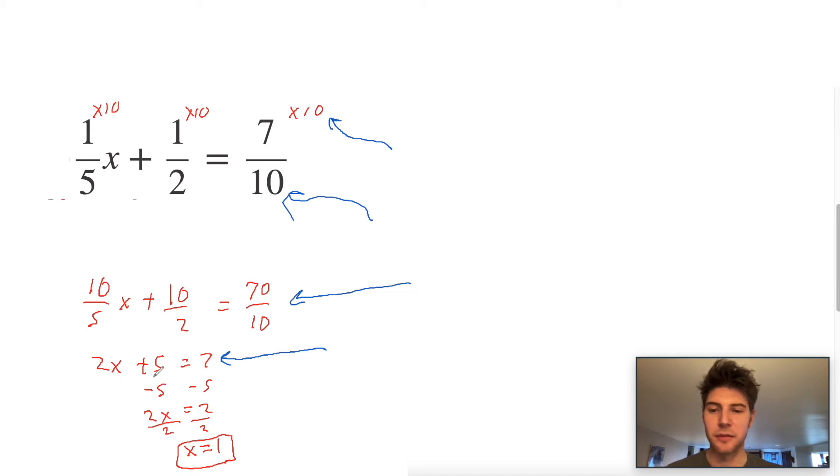We just want to get the x by itself, so we minus 5 from both sides, which gave us the 2. And then now to get the x by itself, we divide it by 2, and that gives us x equals 1.